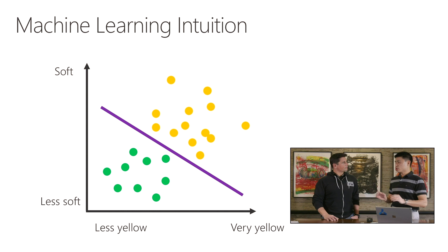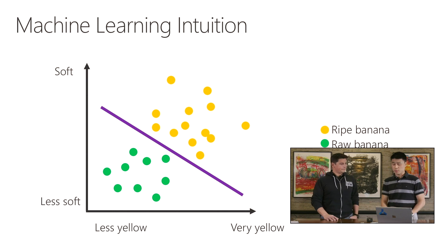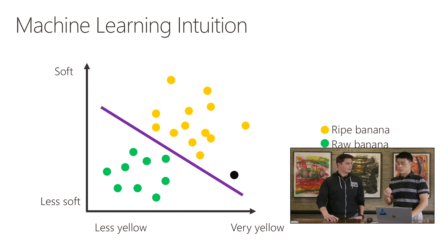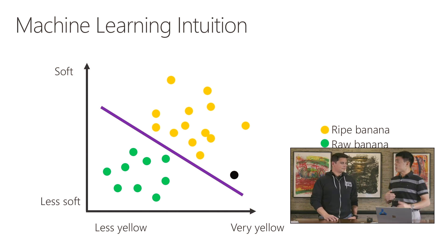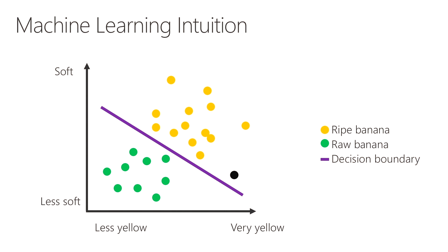Now let's say there's a banana that you've never seen before, and the only thing you know about it is what that instrument reading measures. Based on my prediction, I'm going to predict that this is ripe. And that's at the end of the day what's happening. So a machine learning model — when you're feeding in data, you're feeding it how yellow it is and how soft it is, and the prediction that comes back is ripe or raw.